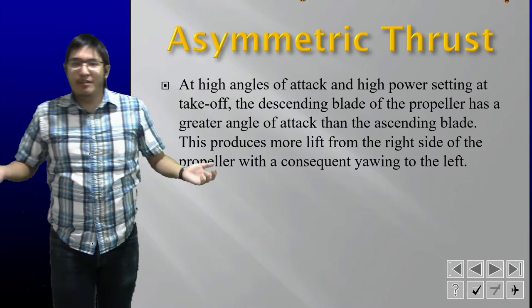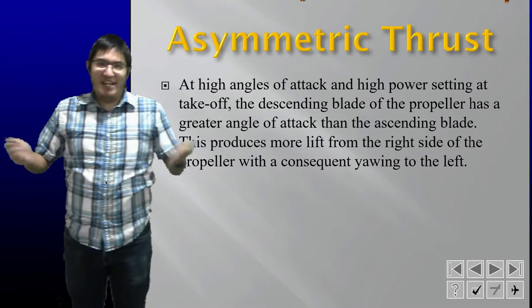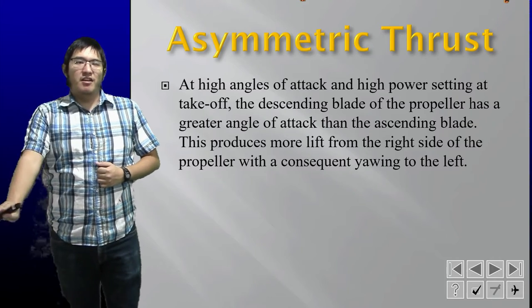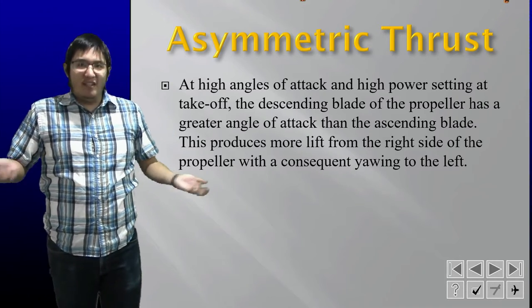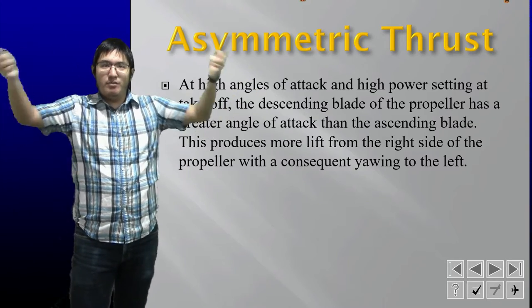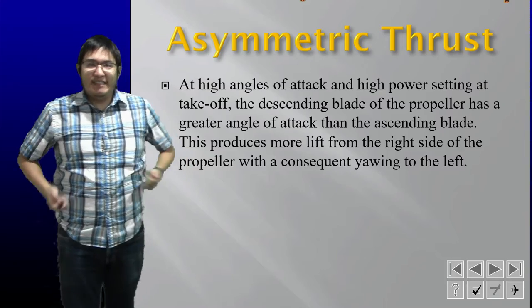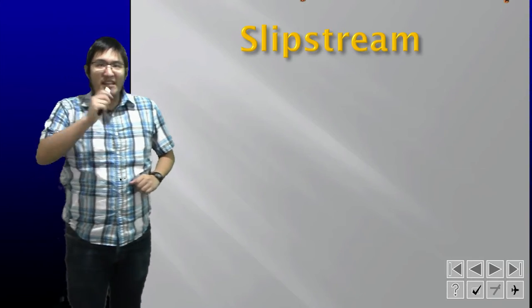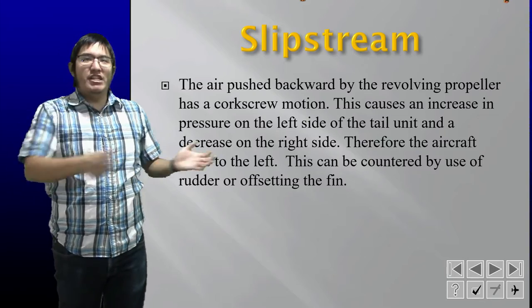This is corrected simply by using right rudder — that's why you'll hear your instructor saying right rudder a lot. This can be combated in multi-engine aircraft where the propellers spin in opposite directions, which essentially counteracts asymmetric thrust.